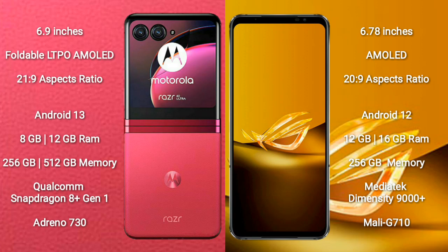Motorola RAZR 40 Ultra runs on the Android 13 operating system. ASUS ROG Phone 6D runs on the Android 12 operating system. Motorola RAZR 40 Ultra comes with 8GB or 12GB RAM and 256GB or 512GB internal storage, Qualcomm Snapdragon 8 Gen 1 processor and GPU Adreno 730.